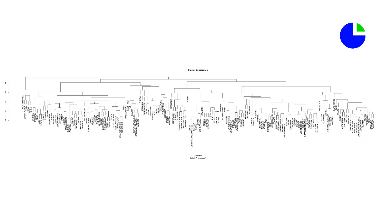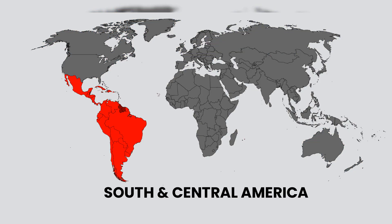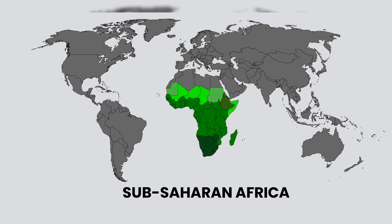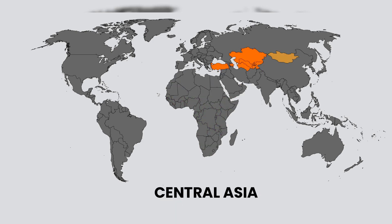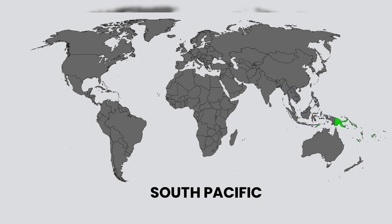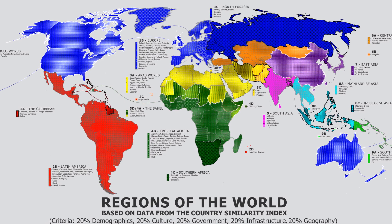A hierarchical clustering of the data resulted in nine distinct macro-regions and 27 sub-regions: the North and Australasia, Central and South America, Middle East and North Africa, Sub-Saharan Africa, Central Asia, South Asia, East Asia, Southeast Asia, and the South Pacific. Let's review the findings and see how they compare to most conventional maps.